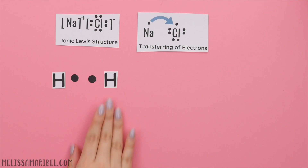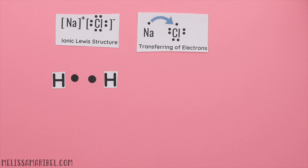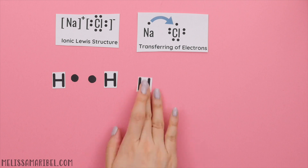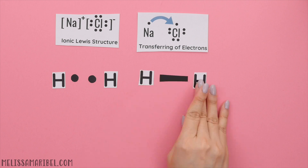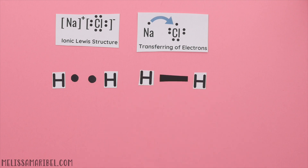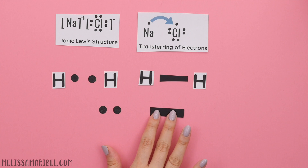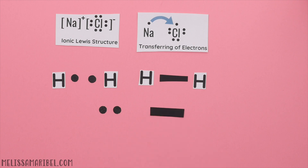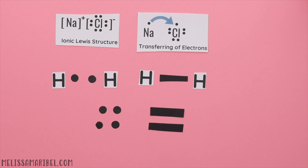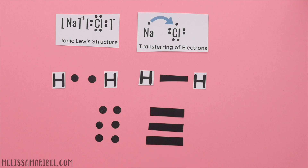We can transfer electrons, which describes an ionic bond, and we can share electrons, which describes a covalent bond — which is what you have normally seen for Lewis structures. Remember: two electrons form one single bond, four electrons form a double bond, and six electrons form a triple bond.